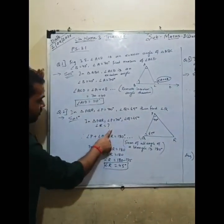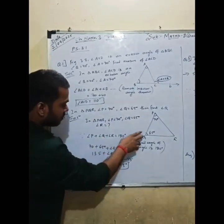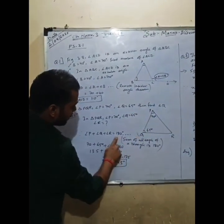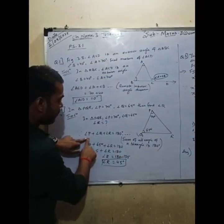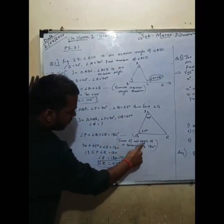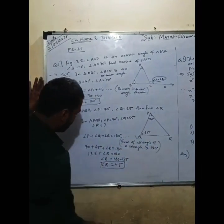As you know, the sum of angles of a triangle is 180 degrees. We write it as angle P plus angle Q plus angle R equals 180 degrees. The sum of all angles of a triangle is 180 degrees.